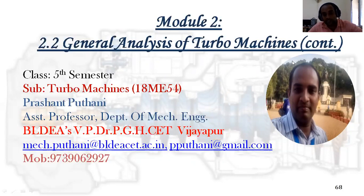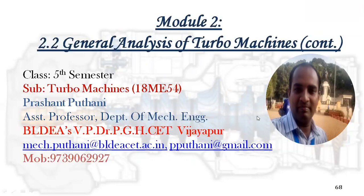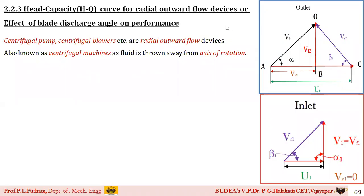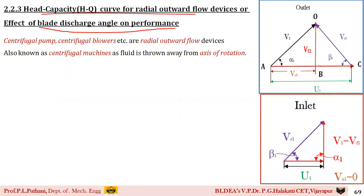We shall start the discussion of today's session. The heading is the head-capacity curve for radial outward flow devices, also known as the effect of blade discharge angle on performance. The radial outward flow devices are power-absorbing machines — generally centrifugal pumps, blowers, and fans. These are all radial outward flow devices.